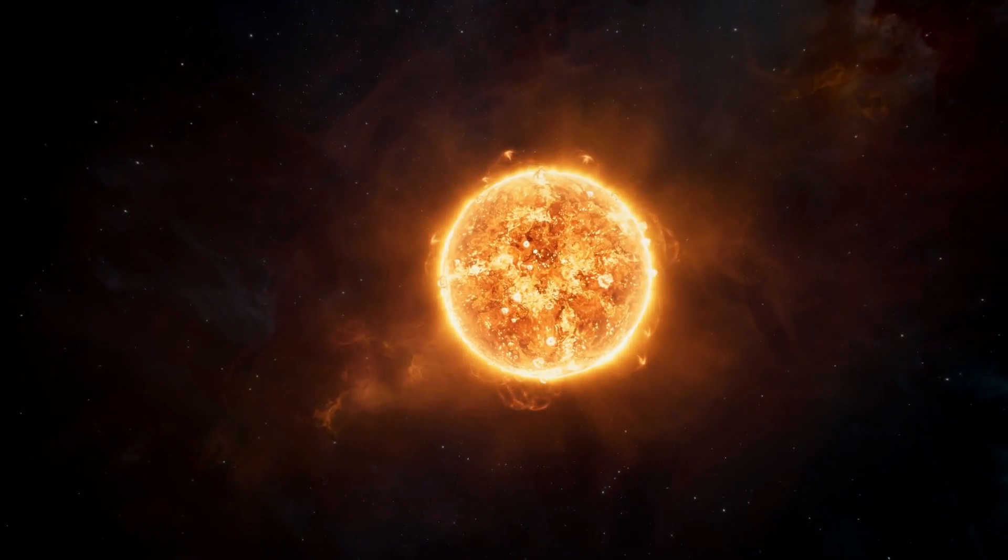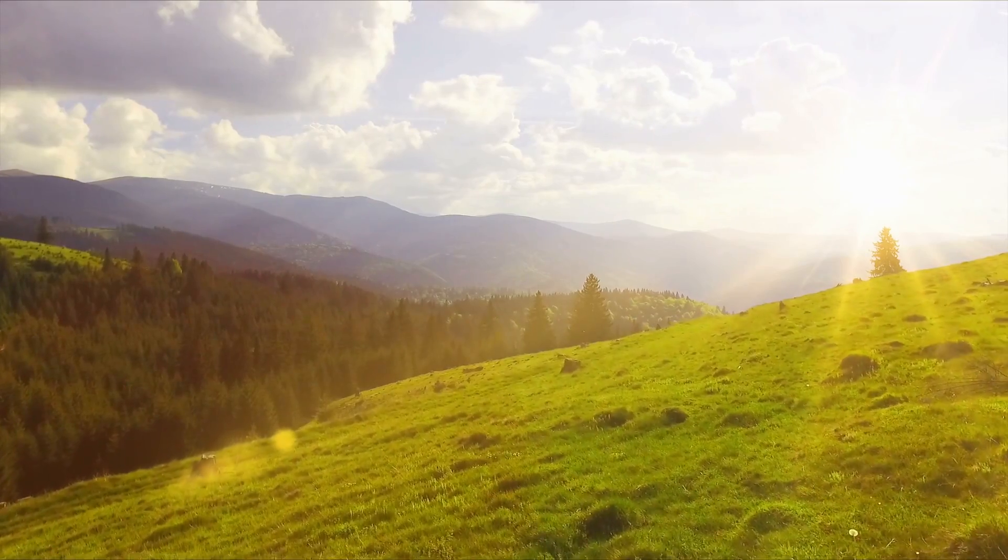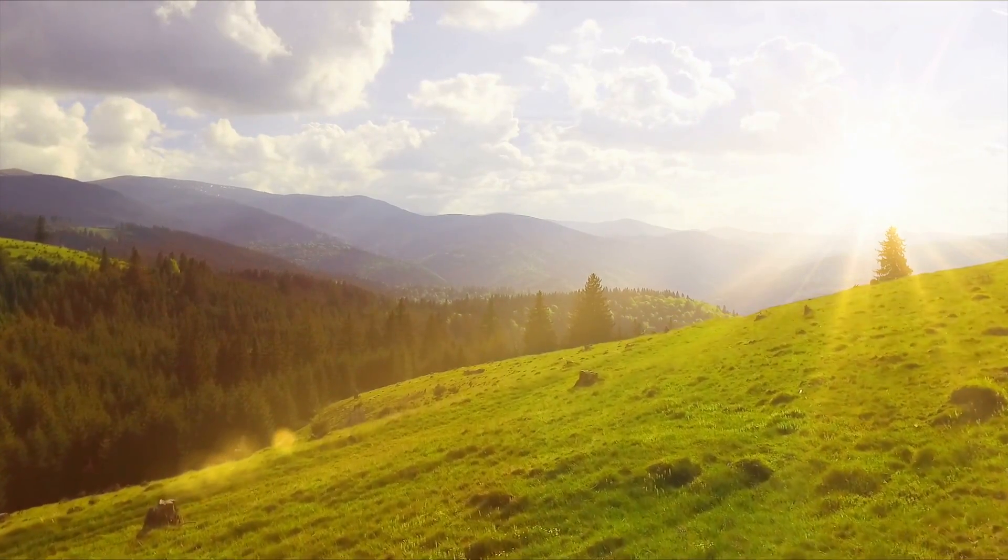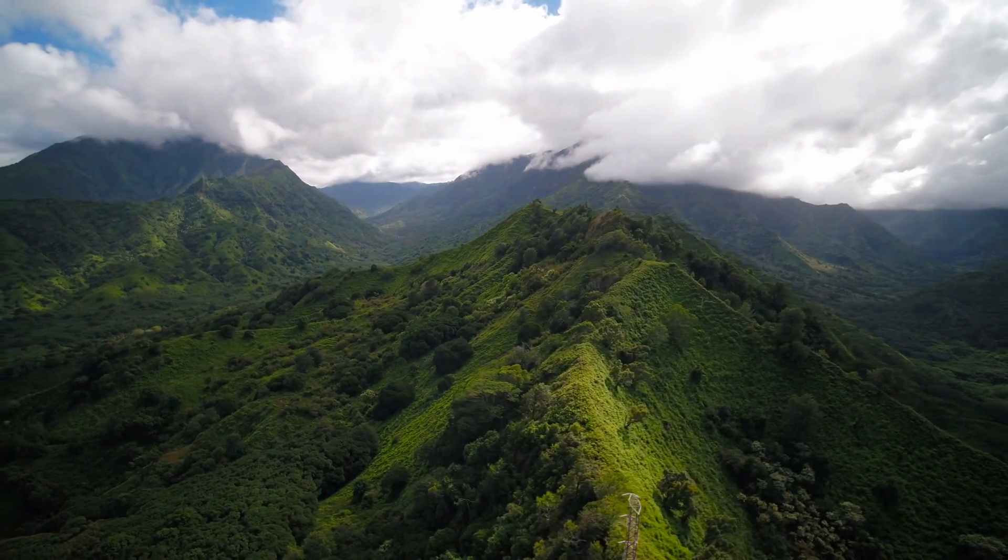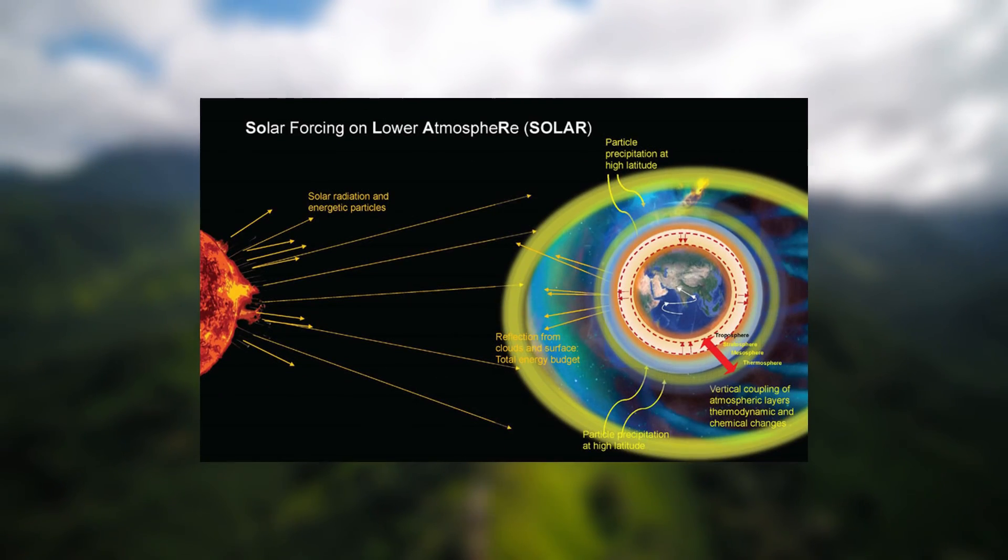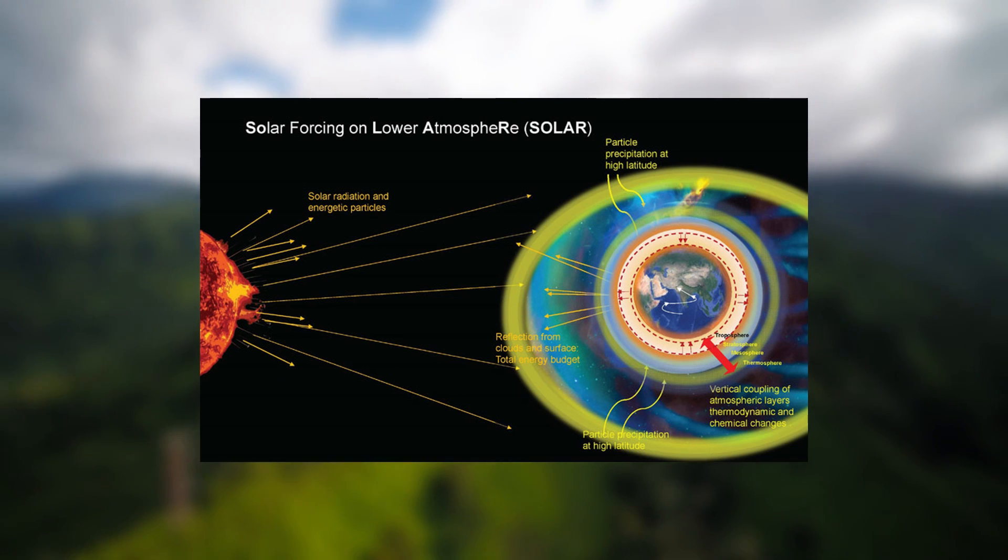The sun is the most powerful and dynamic object in the solar system. Its energy sustains all life on Earth, yet its variability can also pose risks to the planet's technological and atmospheric systems. Modern science refers to these interactions as solar forcing, the influence of solar activity on Earth's environment.